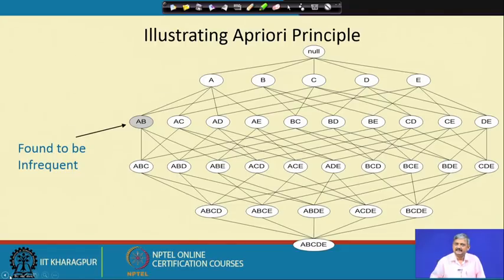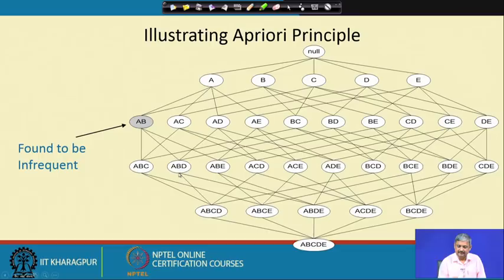What the a priori principle says is that if some item set A, B is not frequent, then none of its supersets — A, B, C; A, B, D; A, B, C, D — can be frequent. For example, if milk and butter themselves are not frequent, then milk, butter, sugar (a 3-item set) cannot be frequent. If a 2-item set is not frequent, a 3-item set cannot be frequent — obviously, the 3-item set will appear in fewer transactions than just the 2-item set.